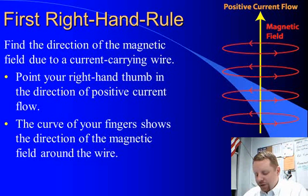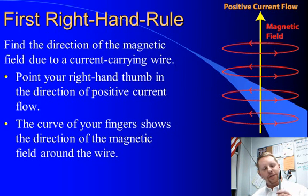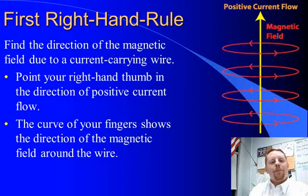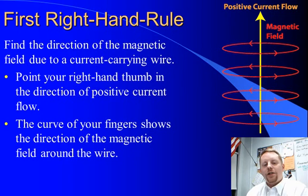The first right-hand rule will tell us the direction of the magnetic field due to a current carrying wire. The general idea is, let's assume we have current running upwards through this as a wire. Point the thumb of your right hand in the direction conventional or positive current flows and wrap your hand around that wire. The direction your fingers point or curl as they wrap around the wire tells you the direction of the magnetic field. You have to use your right hand, but this works pretty well.